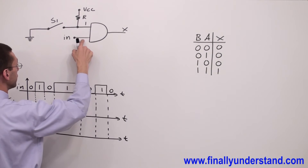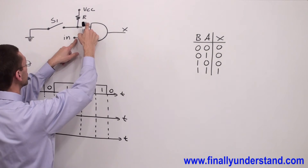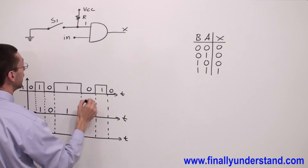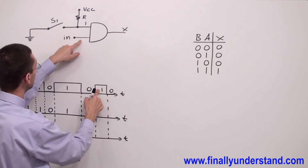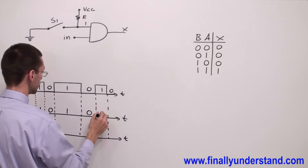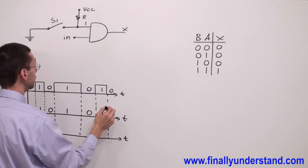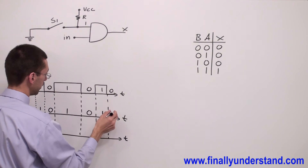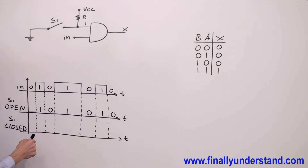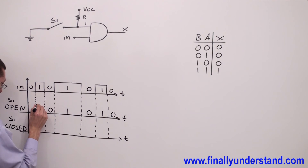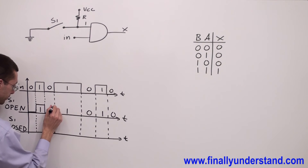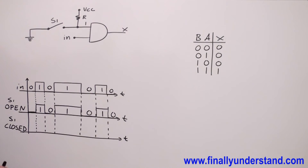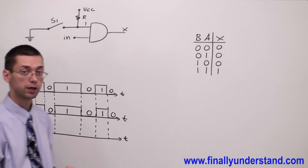Next I have zero at the input, and I always have one at the first input, so zero times one gives me zero. Then one is coming to the input and one at this input gives me one. Finally, zero is coming to the input again — zero times one gives me zero. Now I can draw the output waveform.